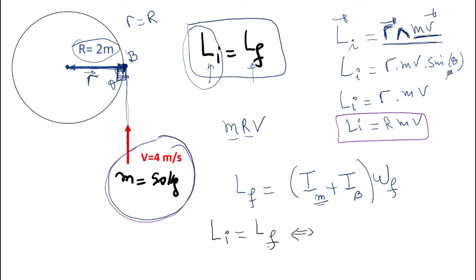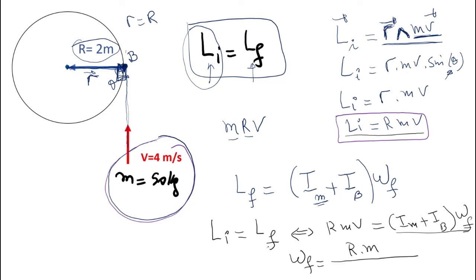Setting initial equal to final: R·m·v equals the moment of inertia of the merry-go-round plus the moment of inertia of the boy, times the final angular velocity omega. Once the boy is on top of the merry-go-round, they move at the same angular velocity omega final. Solving: omega final equals R times mass of the boy times velocity of the boy, divided by the sum of the moment of inertia of the merry-go-round plus the moment of inertia of the boy.